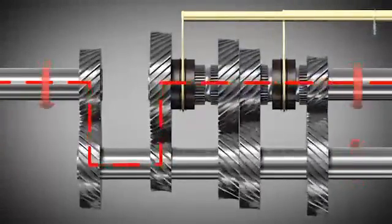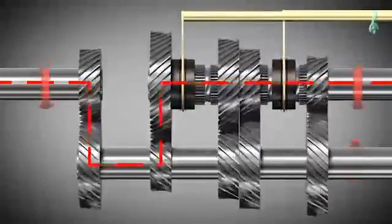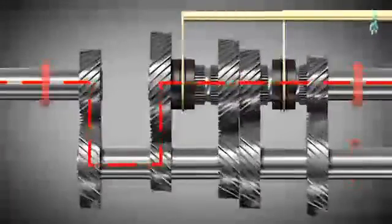Now, the energy produced by the engine is transmitted to the transmission. Then, the transmission transfers the energy through the counter shaft and the output shaft to the wheels. So, the vehicle begins to move.